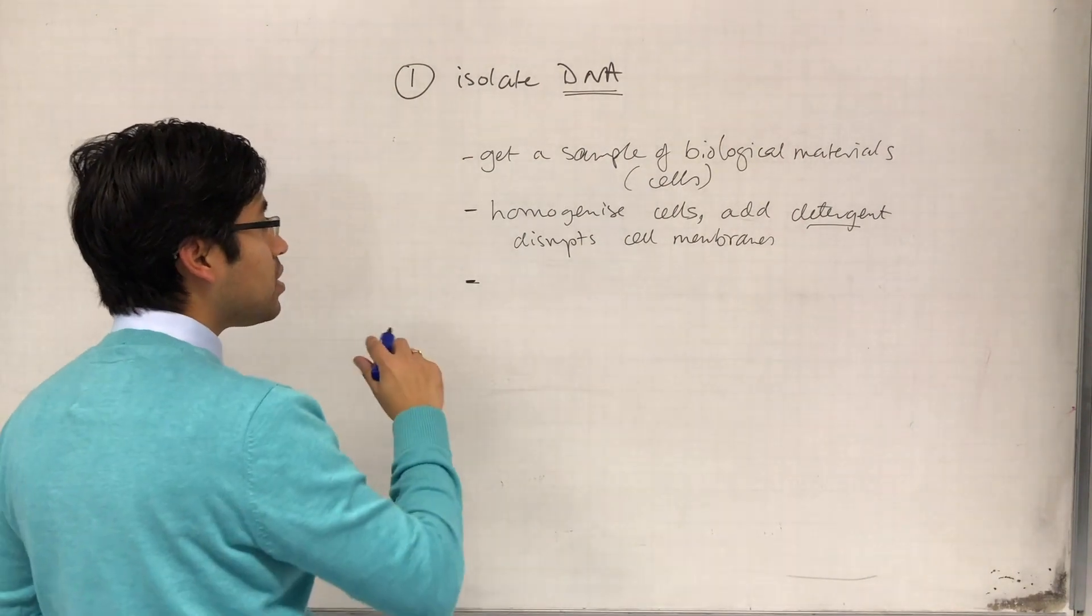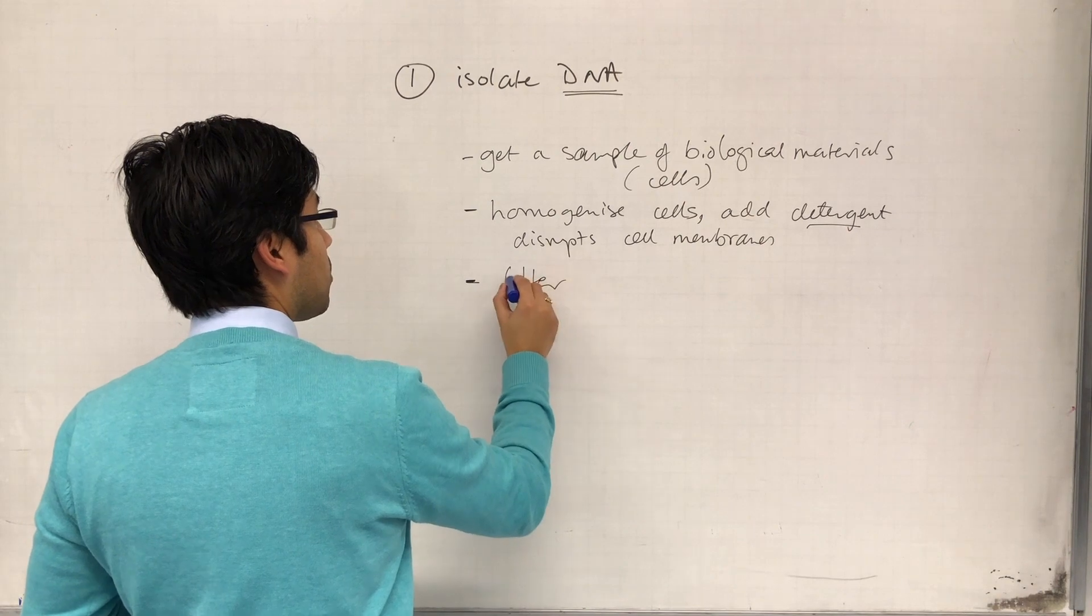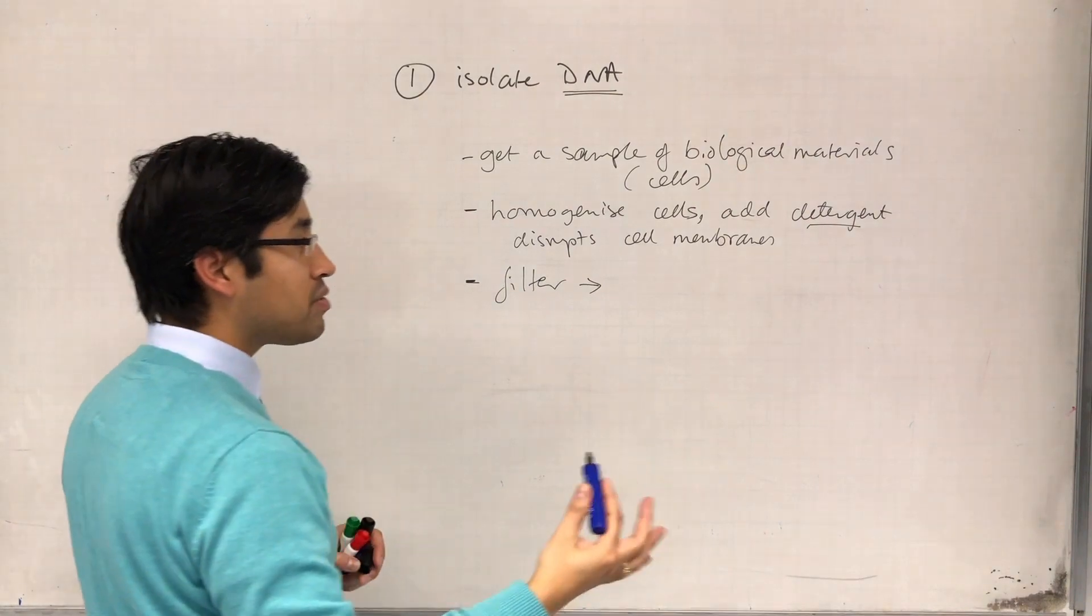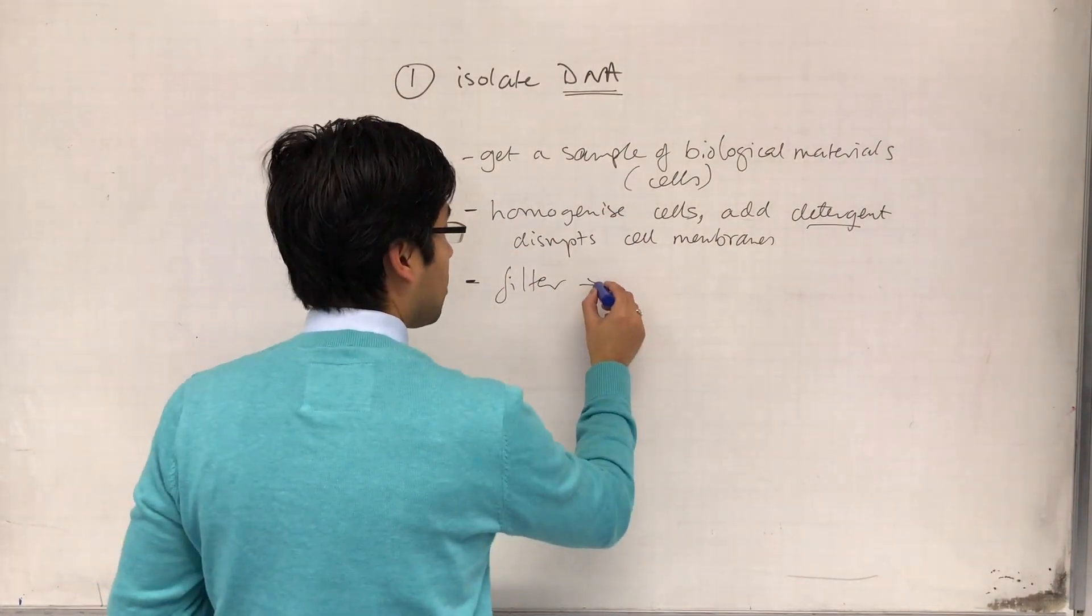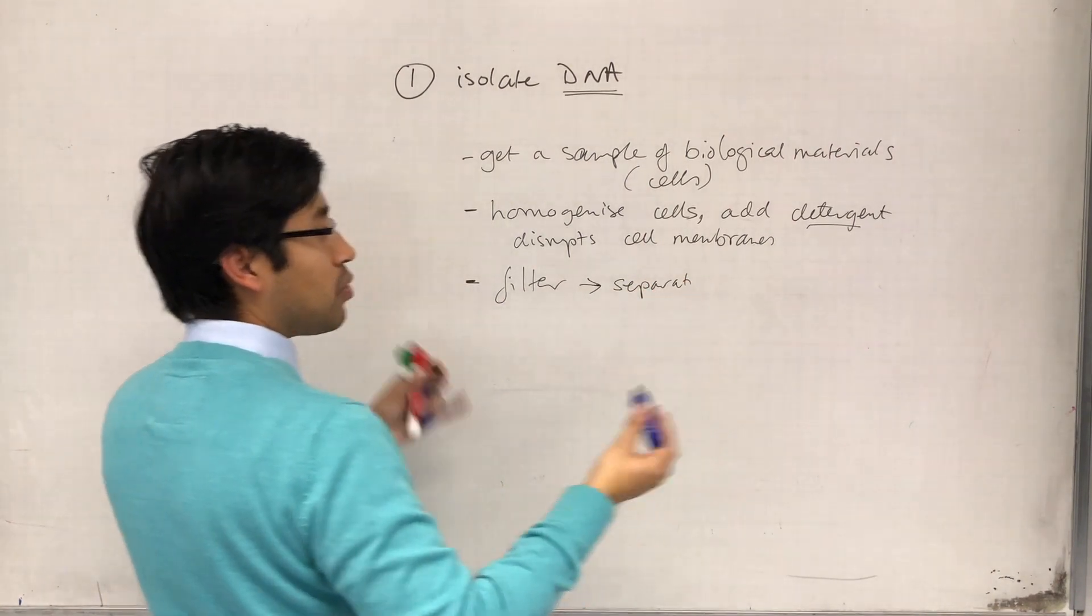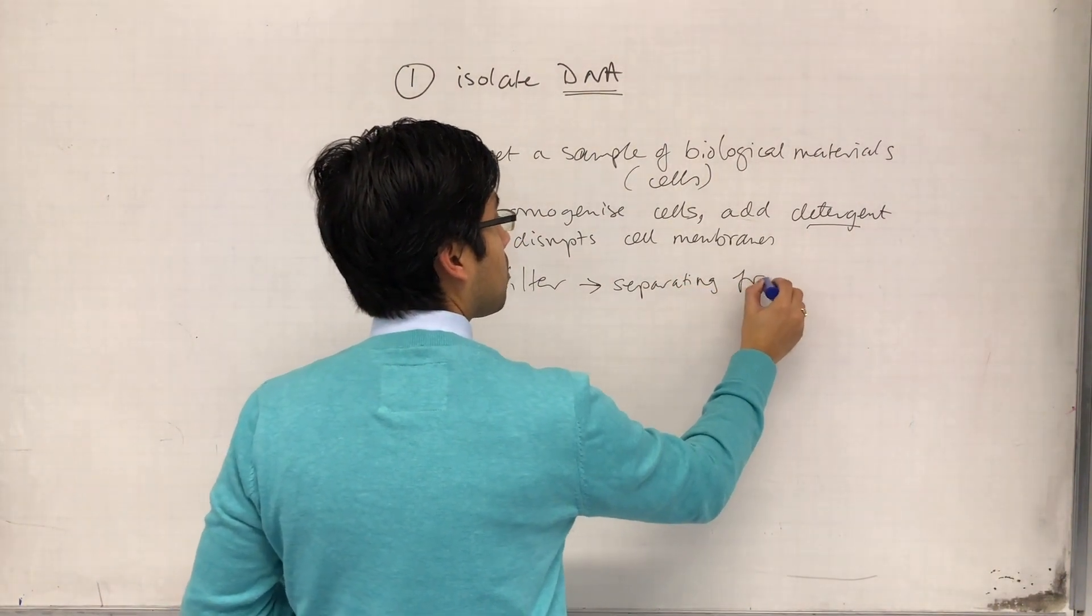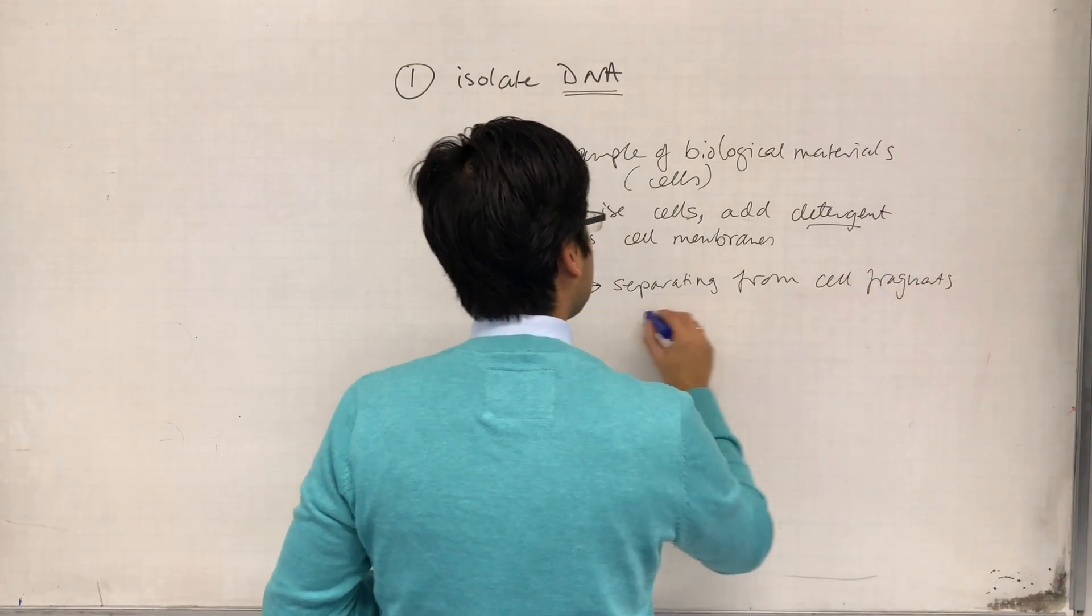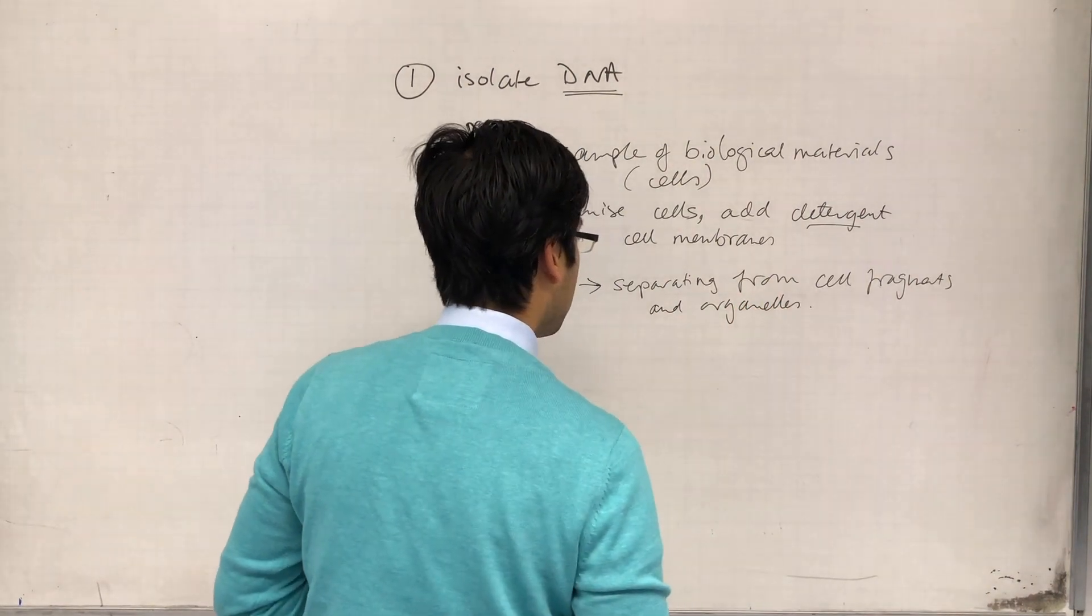So the DNA comes out of the nucleus, and then we filter it, and what this involves is separating the dissolved DNA from all the large cellular structures. So getting rid of effectively all the organelles and all the other material that we're not interested in, separating from cell fragments and organelles.